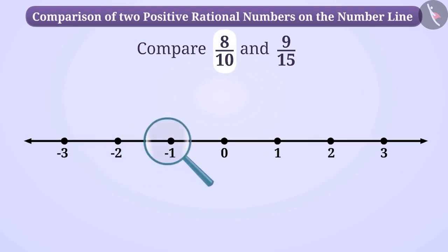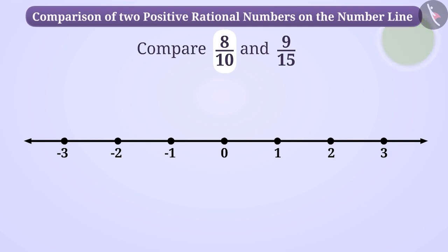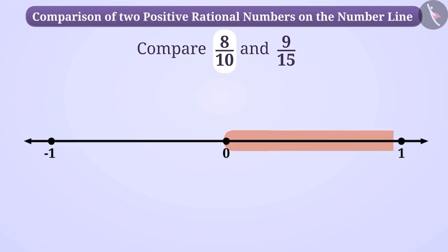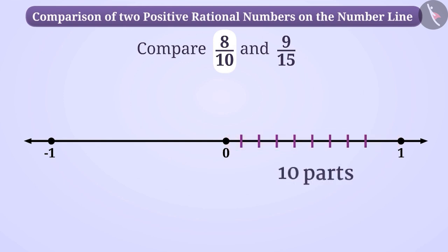Can you tell the two numbers between which 8/10 would lie on a number line? Think for a while. In 8/10, since the numerator 8 is smaller than the denominator 10, therefore 8/10 will lie in between 0 and 1 on the number line. To find the exact position of 8/10, we will divide the distance between 0 and 1 into 10 equal parts and by taking out 8 parts, we mark 8/10.